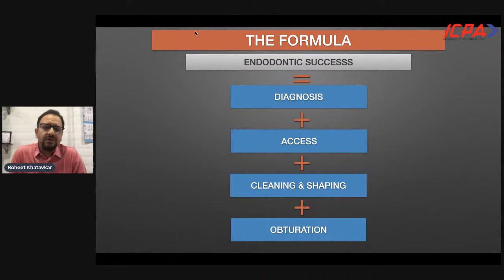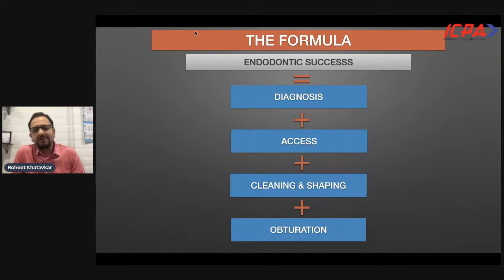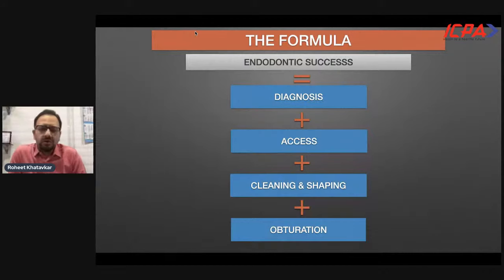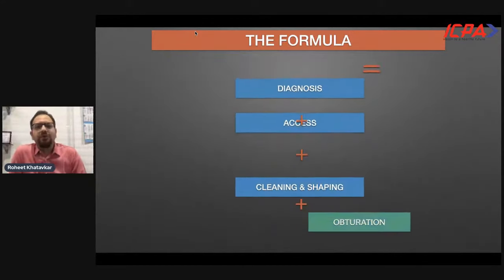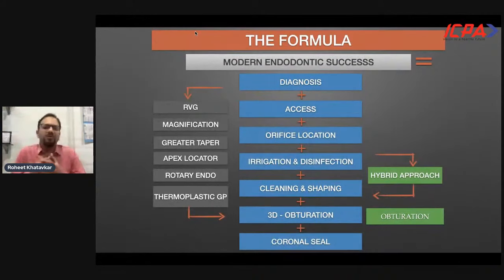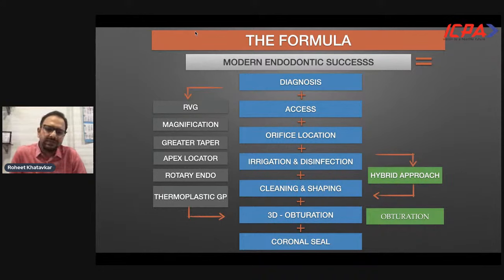The formula for endodontic success has been more or less the same over the past 50 to 100 years: correctly diagnose a case, proper access opening, instrumentation — that is cleaning, shaping, and obturation. With new concepts, techniques, and materials, this formula has become a little more complex, but these newer developments have also made performing the same procedure a little simpler and easier for us dentists.